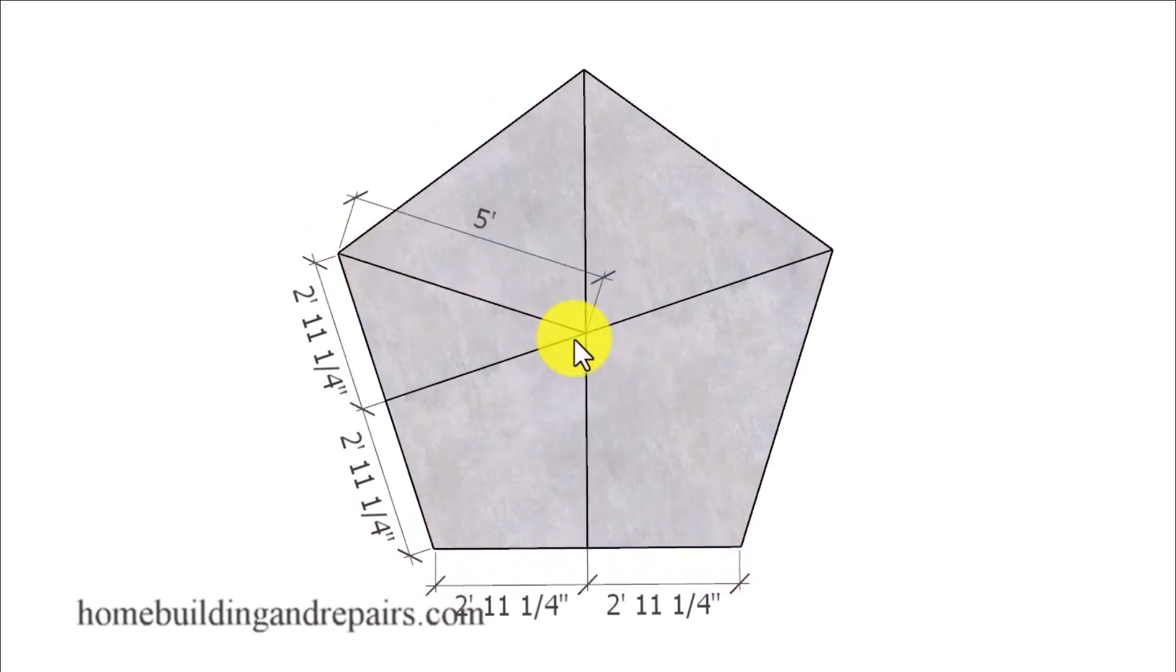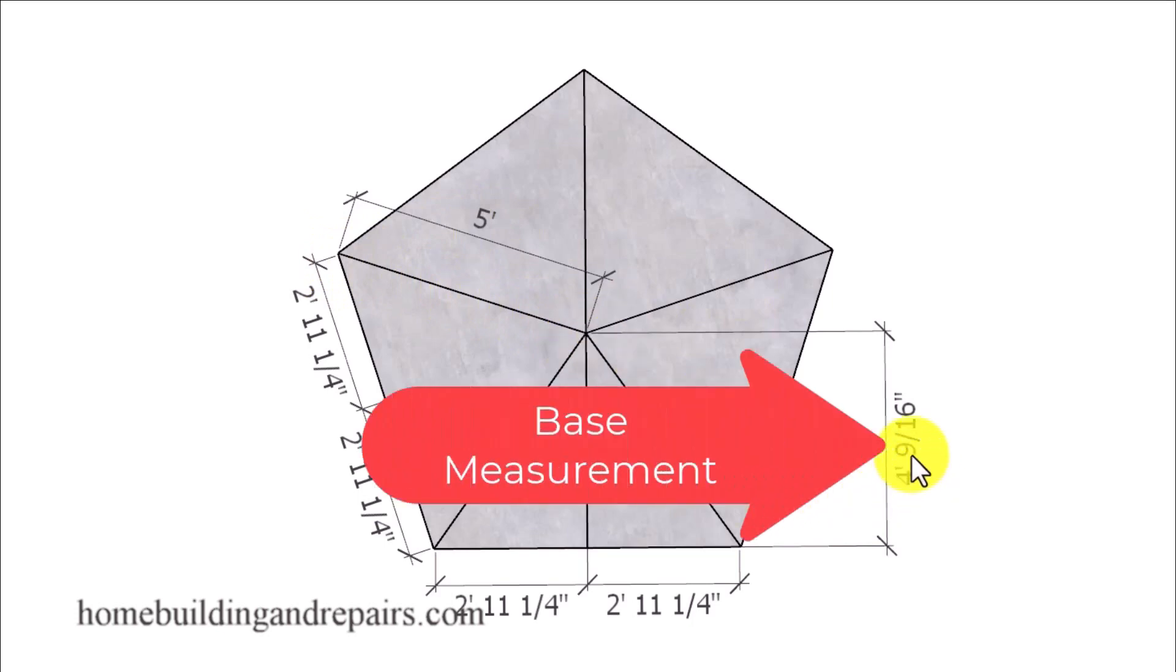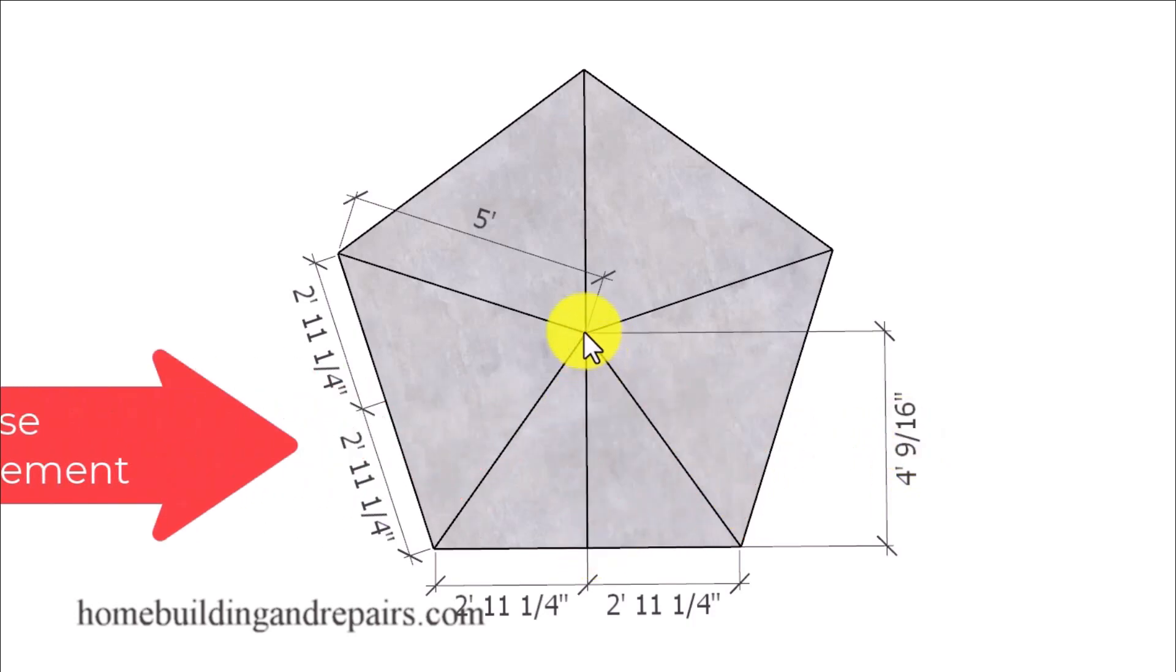And instead of using this measurement here we're going to use this measurement here and use common rafters instead of hip rafters. And you can see here where we have a five foot measurement for our hip rafters and a four foot and nine sixteenths inches for our common rafters.